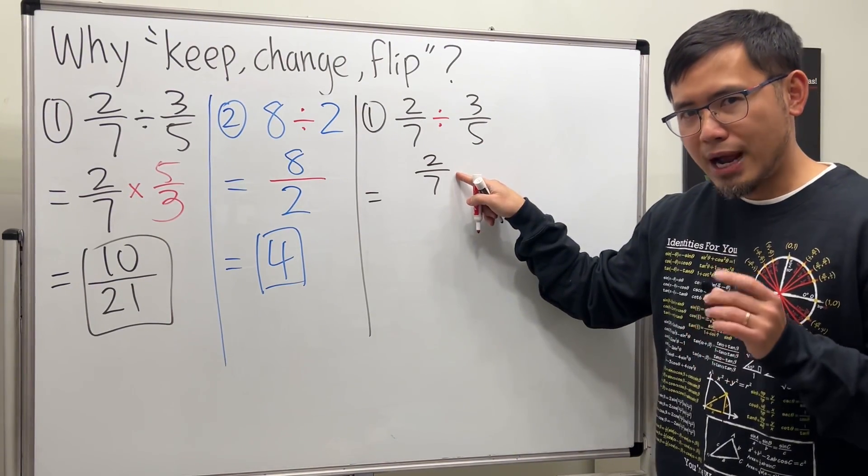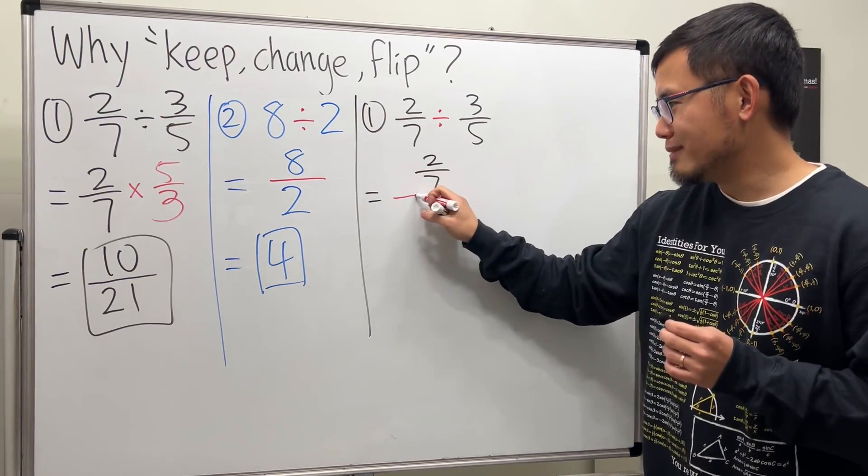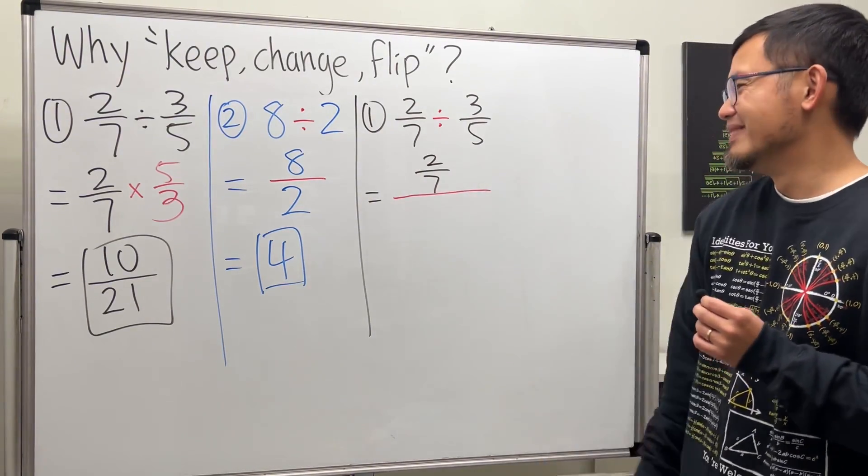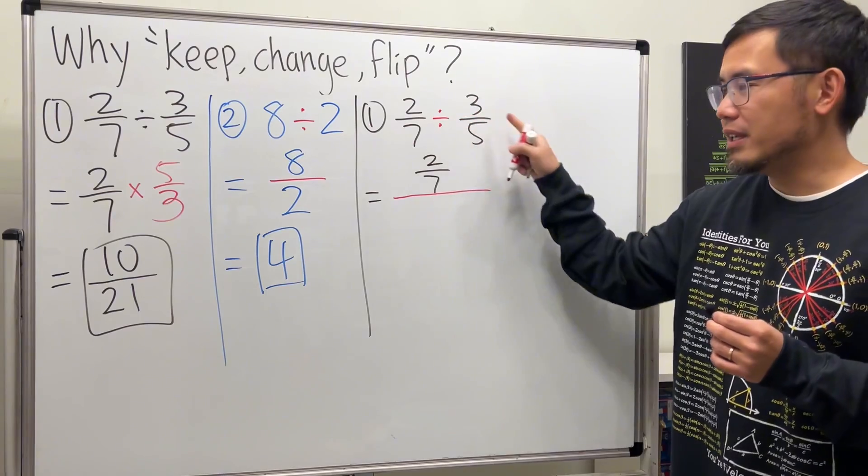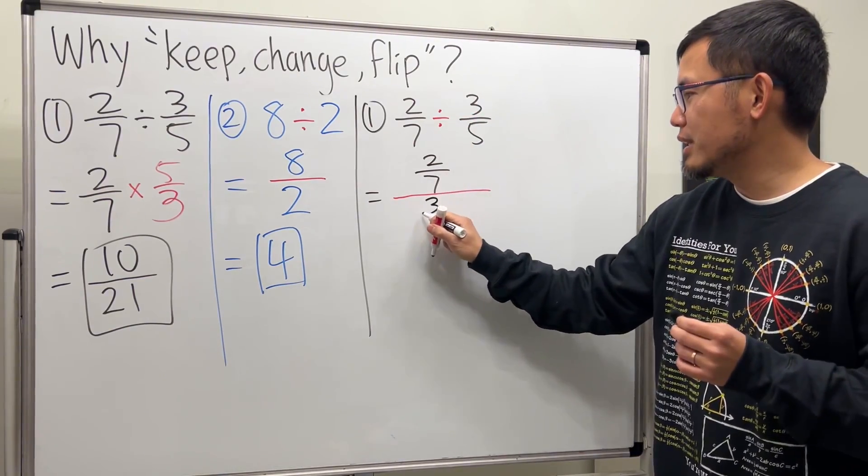And the division symbol becomes a fraction bar. We have a fraction bar already, I know. Let's have another one and make it bigger. And then, for the second number, which is this fraction, it goes to the bottom. We have 3 over 5.